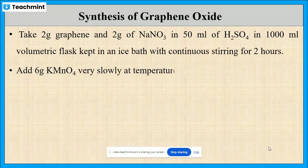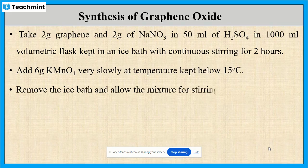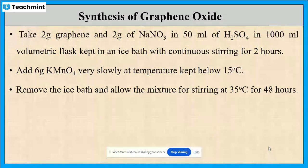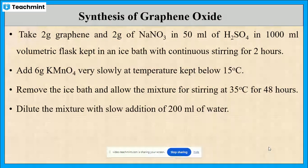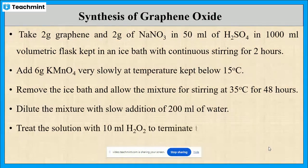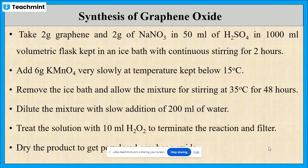After 2 hours, add 6 grams of potassium permanganate very slowly at a temperature below 50 degrees Celsius. After that, remove the ice bath and allow the mixture to stir for 48 hours. After 48 hours, dilute the mixture with a slow addition of 200 ml of water. Later, add 10 ml of hydrogen peroxide and filter the solution. Finally, dry the obtained product to get powdered graphene oxide.